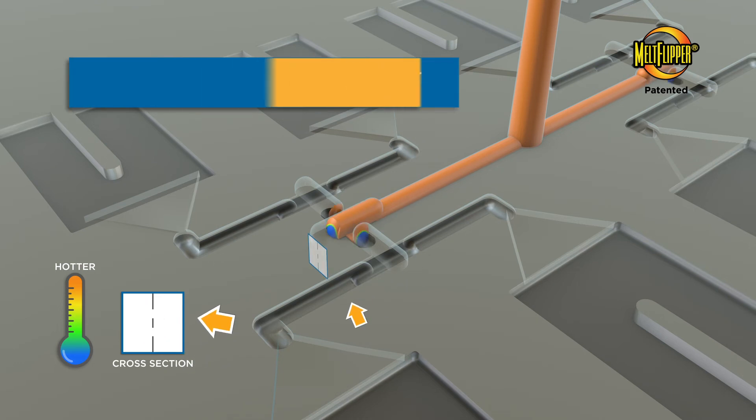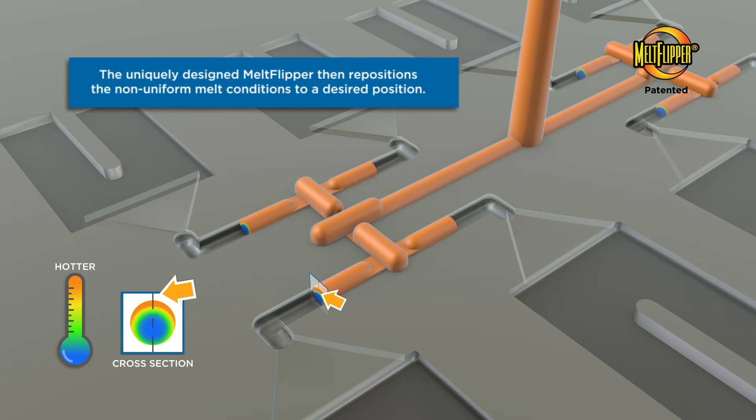Now look at the cross-section of the plastic melt after it flows through the Melt Flipper runner geometry. The side-to-side imbalance we saw before is now rotated 90 degrees so that either side of the runner continues to have equal material properties.